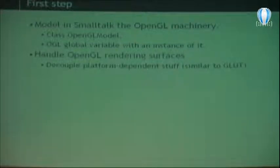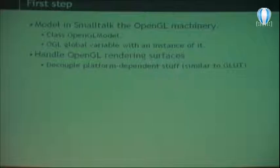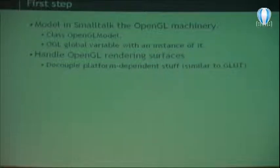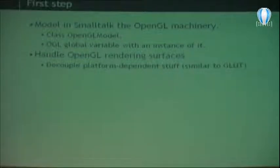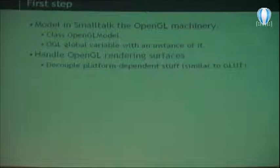When I started with this, I thought of everything as one big layer. But I realized that was not very healthy for the system and was quite a nightmare to maintain. So I split it in two layers. The basic idea, which I recognized when I realized it had to be done that way, is to first model in Smalltalk the OpenGL machinery. Of course I can't reproduce it all because it would be a really huge model, but I want to have a class that represents the underlying OpenGL model.